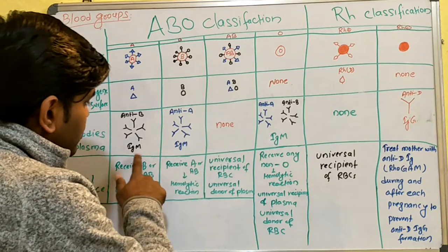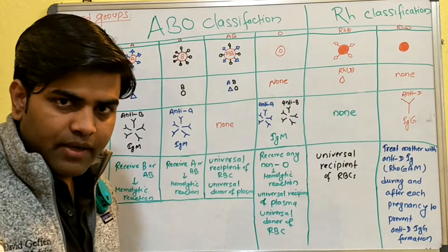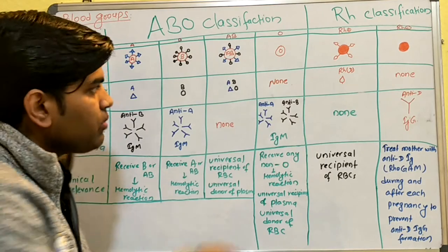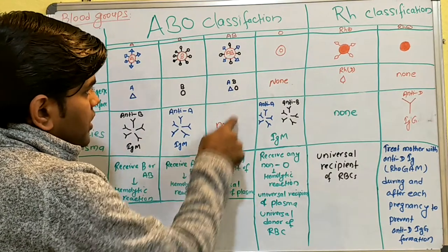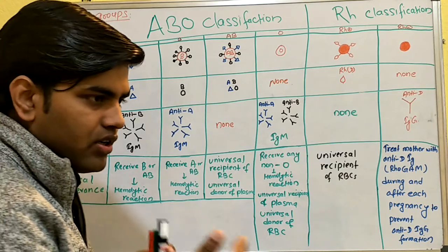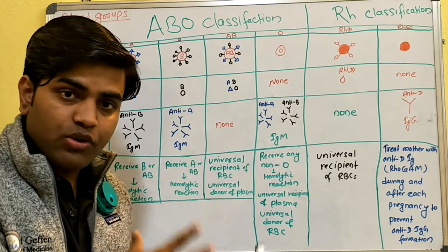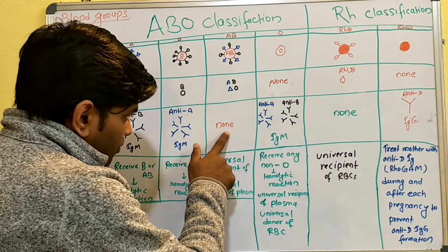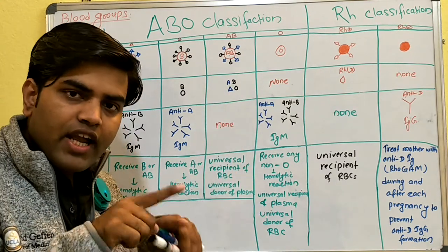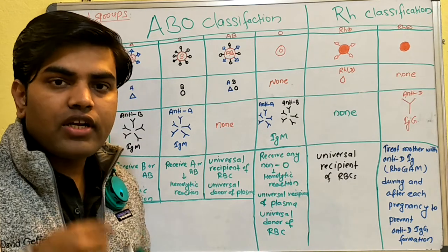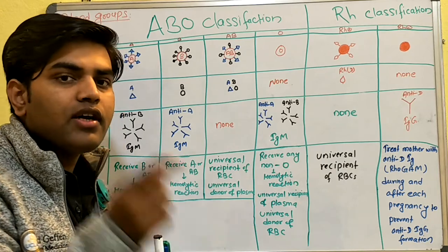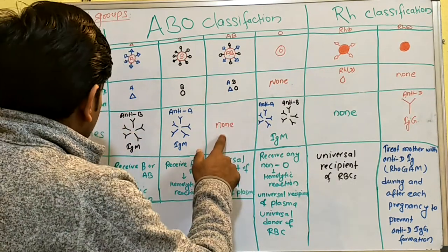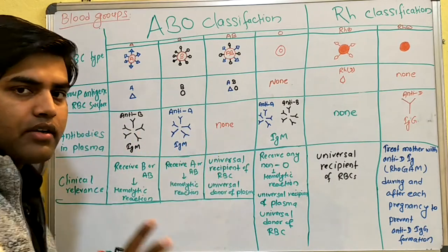If a person has blood group AB, both antigens A and B are present on the RBC. The body cannot afford any antibody in the plasma — because if either anti-A or anti-B comes, both antigens are there and a reaction will occur. The antigen-antibody reaction activates the classical complement pathway, ending with the MAC (membrane attack complex) which drives to the RBC and lyses it. So in AB blood group, plasma antibodies are zero.